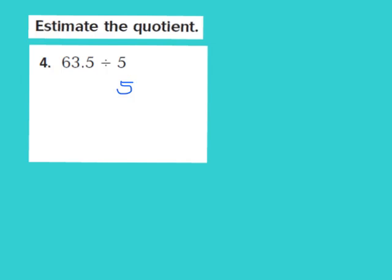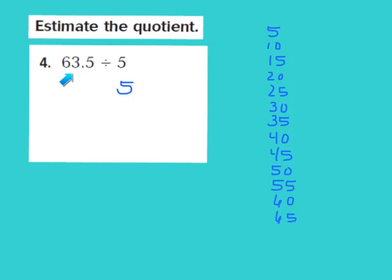I'll list out multiples of 5: 5, 10, 15, 20, 25, 30, 35, 40, 45, 50, 55, 60, and 65. I know that 63 and 5 tenths falls in between 60 and 65, and it is closest to 65. So I'll turn 63 and 5 tenths into the whole number 65.